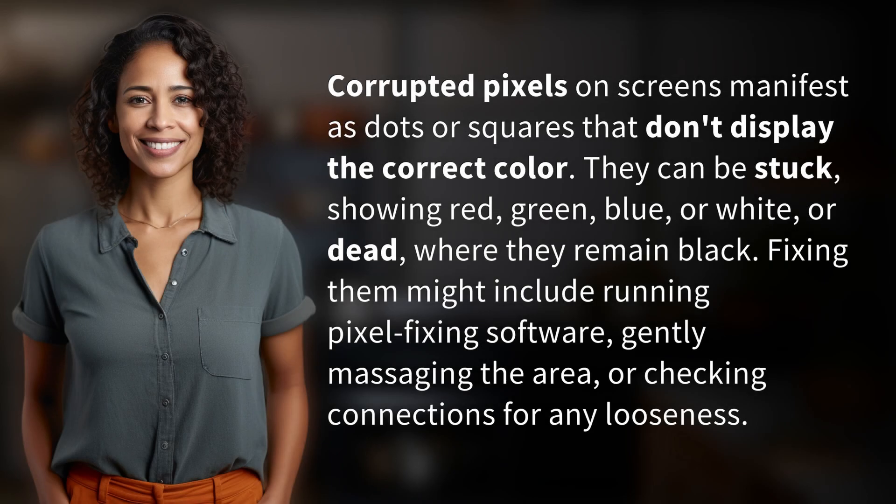Corrupted pixels on screens manifest as dots or squares that don't display the correct color. They can be stuck, showing red, green, blue, or white, or dead, where they remain black.